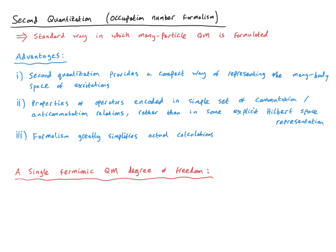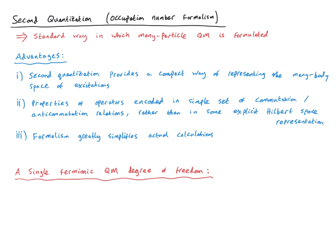Furthermore, the properties of quantum mechanical operators are encoded in a simple set of commutation or anticommutation relations, rather than in some explicit Hilbert space representation. Finally, and most importantly, this second quantization formalism greatly simplifies actual calculations, as we'll see in this lecture. First of all, let's consider a single fermionic quantum mechanical degree of freedom. Understanding this system will be the foundation on which everything else rests. Later on in the lecture, we'll expand this to multiple degrees of freedom.